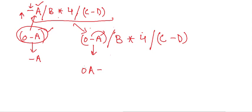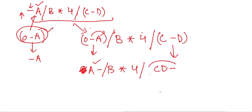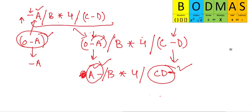We solve the bracket with the unary minus first: 0 minus A becomes A minus — we don't need to write the zero. Then we solve the bracket C minus D, which becomes CD minus. Remember the BODMAS rule: division and multiplication carry equal weight, so you can perform either first.